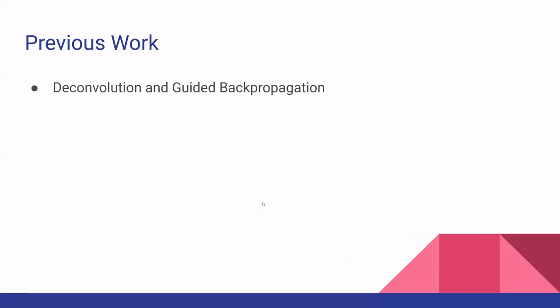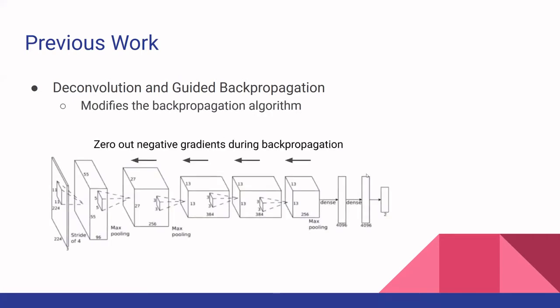Another method involves modification of the backpropagation. The one that the paper focuses on is guided backpropagation, which is an extension of deconvolution. In the backpropagation process, they start from the high-level unit, and when computing the partials, they remove all negative values using a ReLU activation function. Only features that led to the class score are used, and negative values unrelated to the class prediction are excluded.